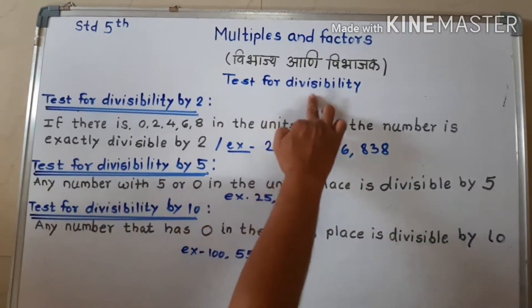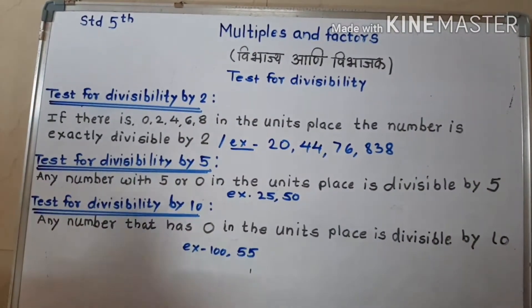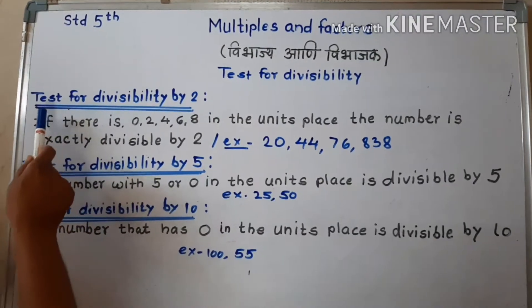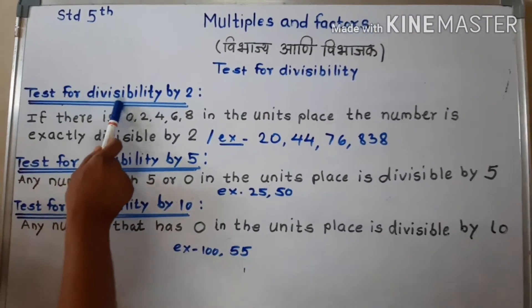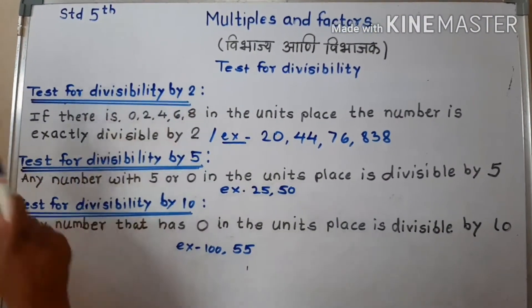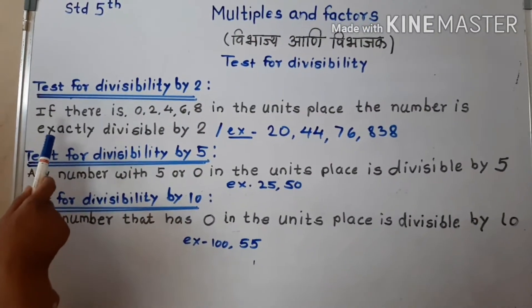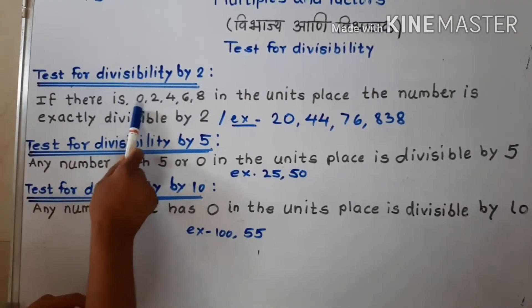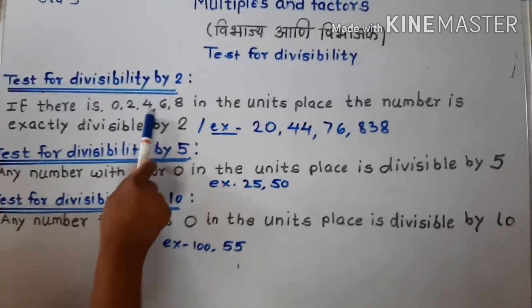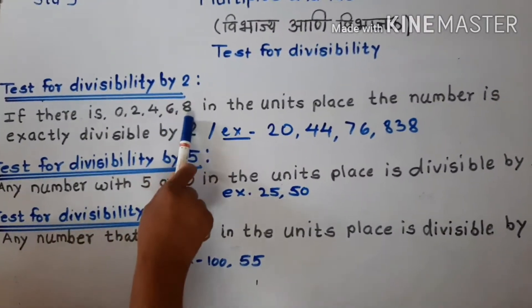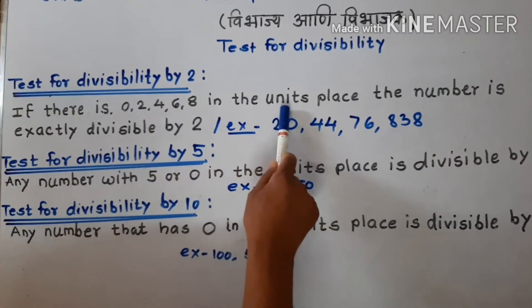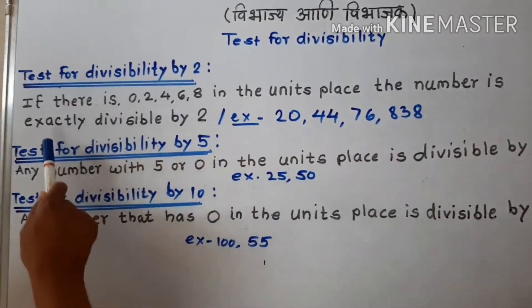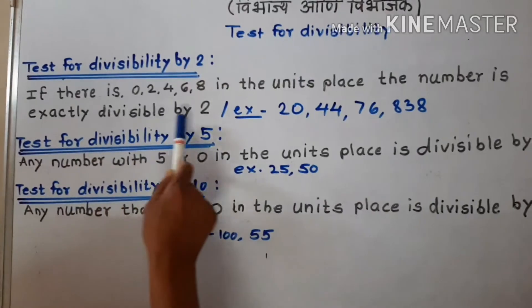Test for divisibility by 2. See this very carefully. If there is a 0, 2, 4, 6, or 8 in the unit place, the number is exactly divisible by 2.